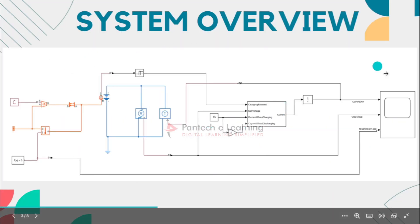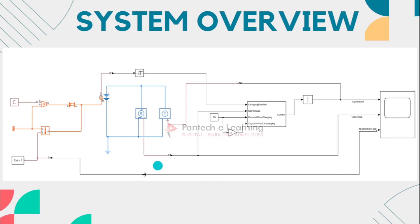This is our overall simulation model. This simulation model consists of a battery CC-CV block, a constant current source block, a constant temperature block, and a constant ambient temperature block.